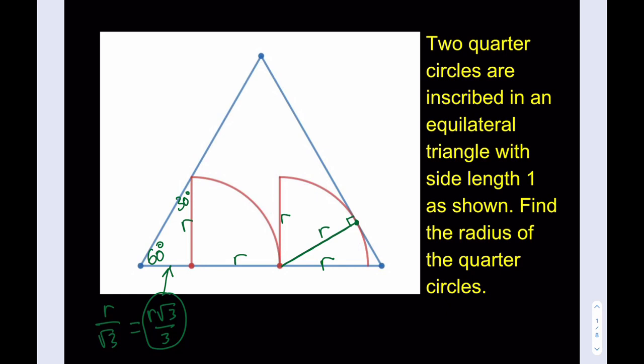Now what happens is we get another 30-60-90 triangle here. This is 30 degrees, and this is 60 degrees. So what do we know? We know that the longer leg again is R. So in other words, these two triangles are actually congruent, but that's okay. We can handle that. What is that supposed to mean? It means that the shorter leg is going to be R root 3 over 3.